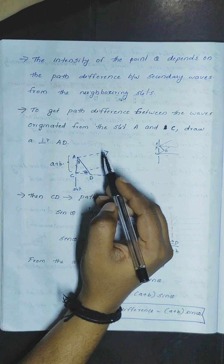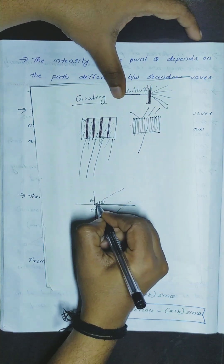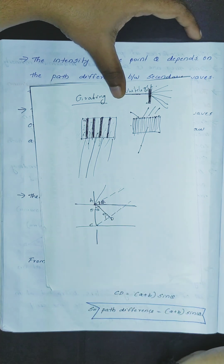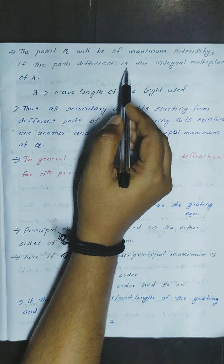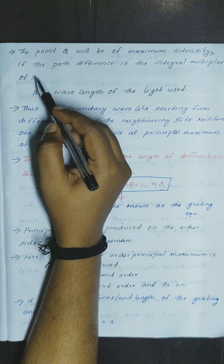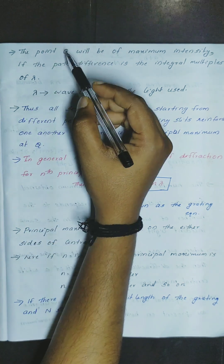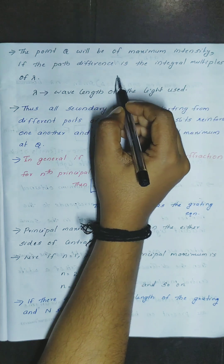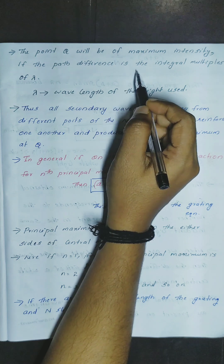CD is equal to (A+B) sin theta. A plus B is the grating constant. The point Q will be of maximum intensity if the path difference is an integral multiple of lambda, where lambda is the wavelength of the light.